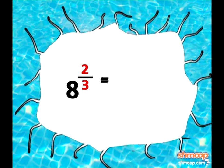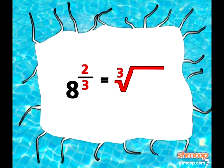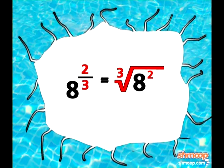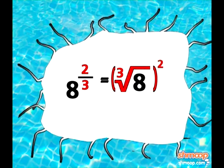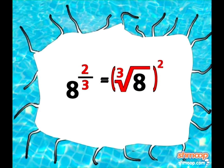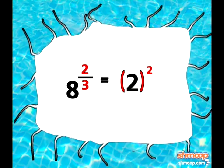Which makes 8 to the power of 2 thirds the cubed root of 8 squared. Since the cube root of 8 is 2, this simplifies to 2 to the power of 2,